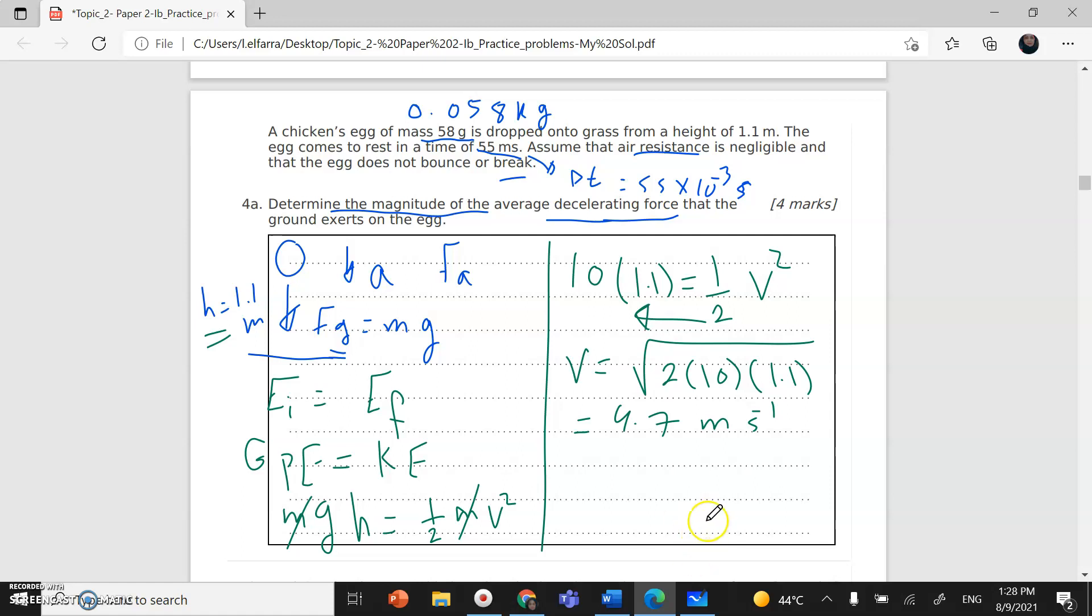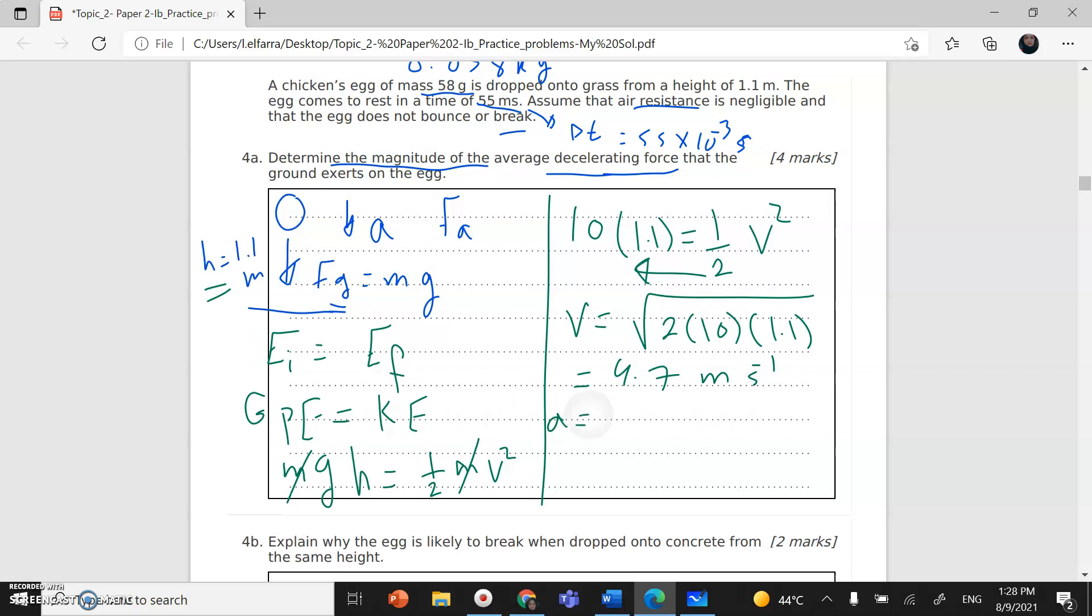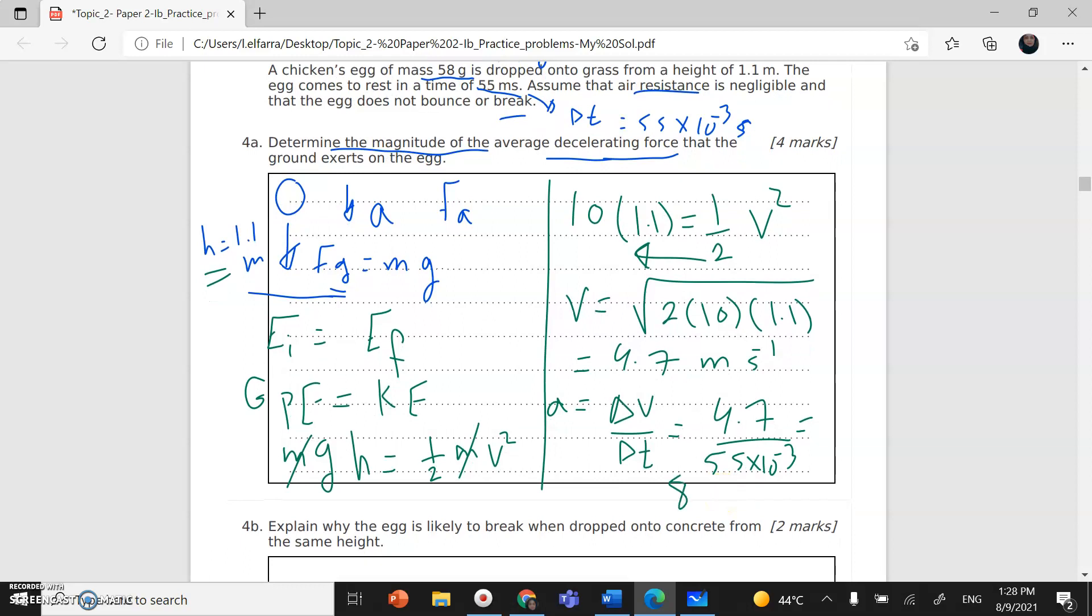Now I can find the acceleration. Acceleration equals change in velocity divided by change in time. Initial velocity is 0, then it accelerates till it reaches 4.7. So change in velocity is 4.7, divided by 55 milliseconds, which is 55 times 10 to the power negative 3. This gives you 85 meters per second squared.